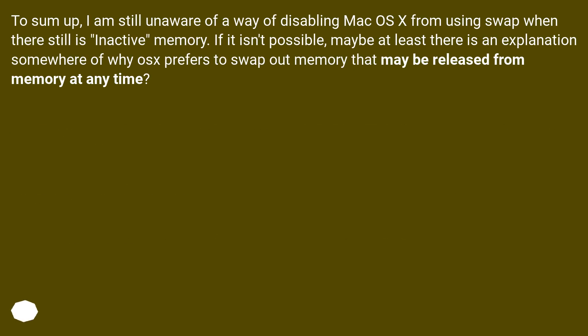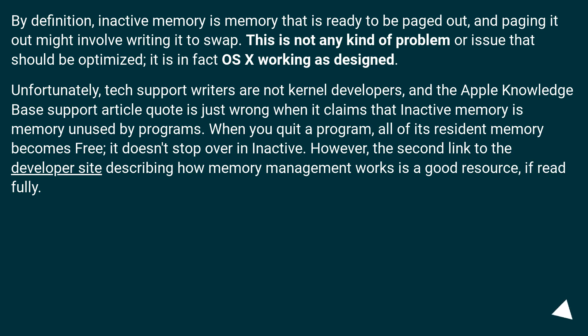To sum up, I am still unaware of a way of disabling Mac OS X from using swap when there is still inactive memory. If it isn't possible, maybe there is at least an explanation of why the OS prefers to swap out memory that may be released at any time. By definition, inactive memory is memory that is ready to be paged out, and paging it out might involve writing it to swap. This is not a problem to be optimized — it is in fact OS X working as designed.